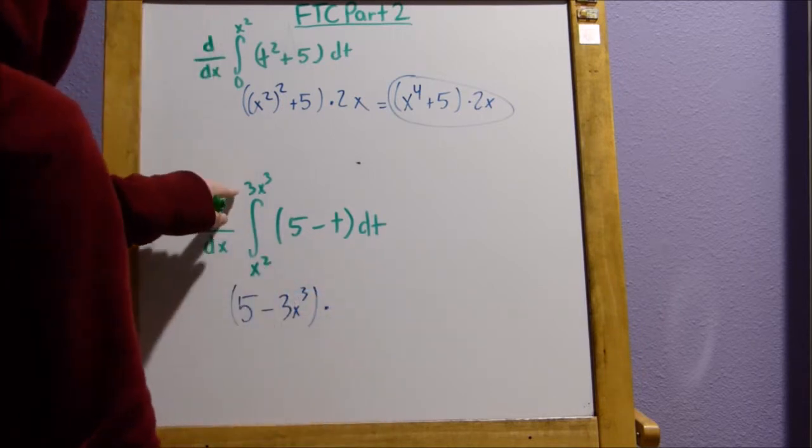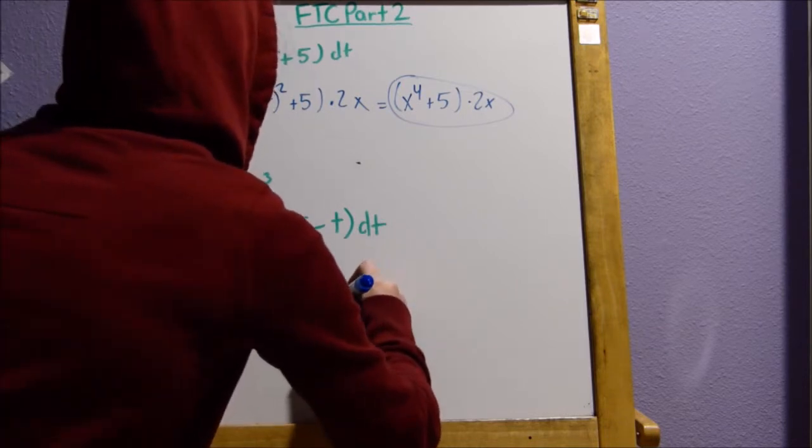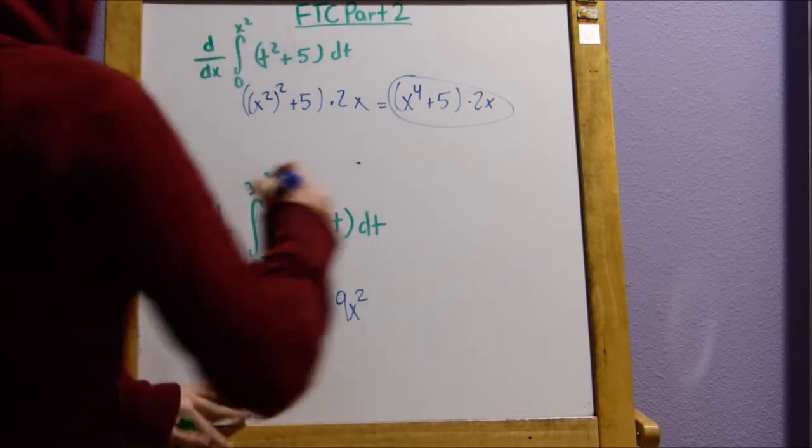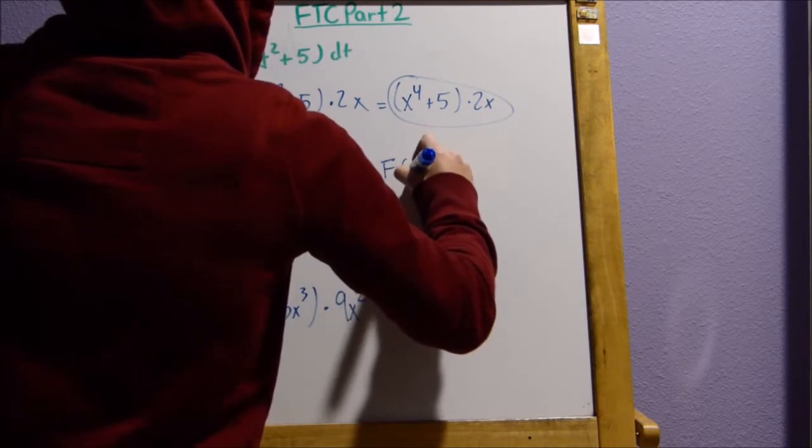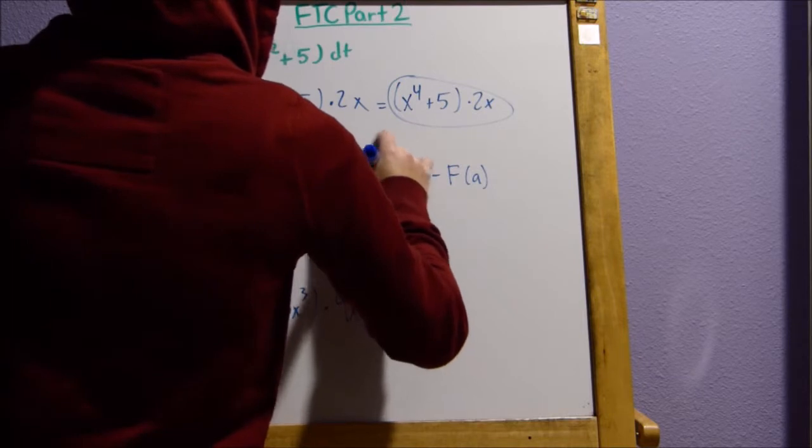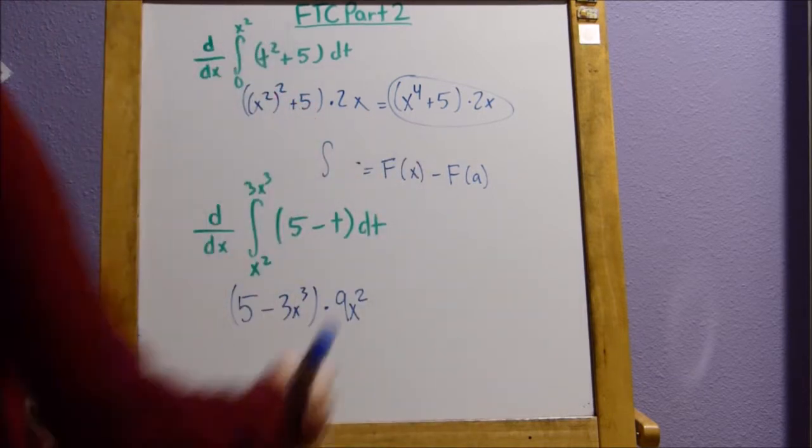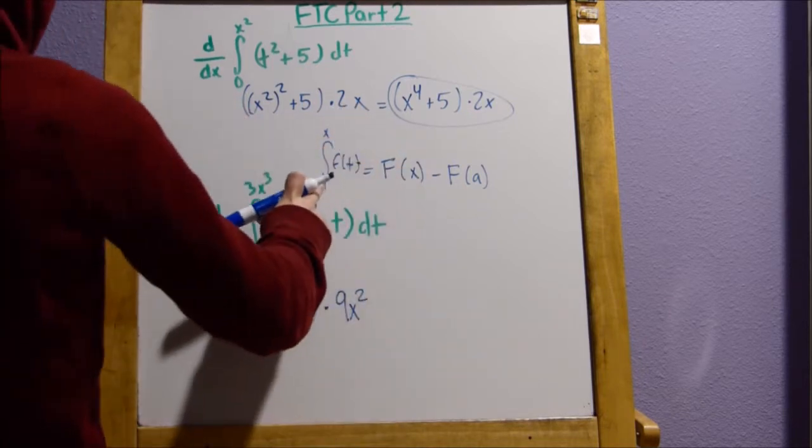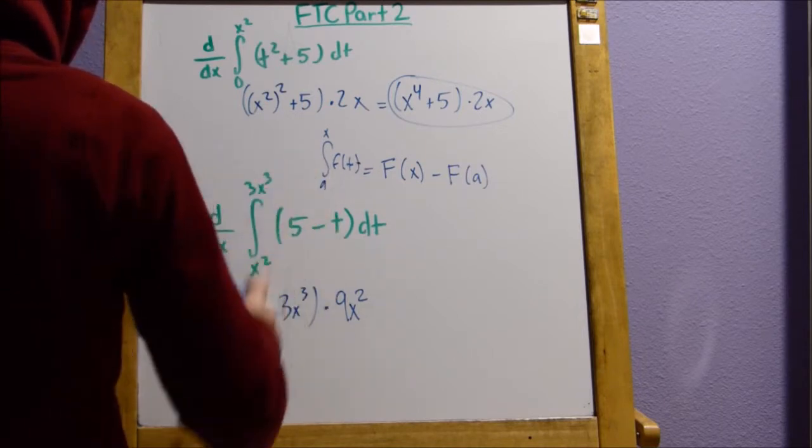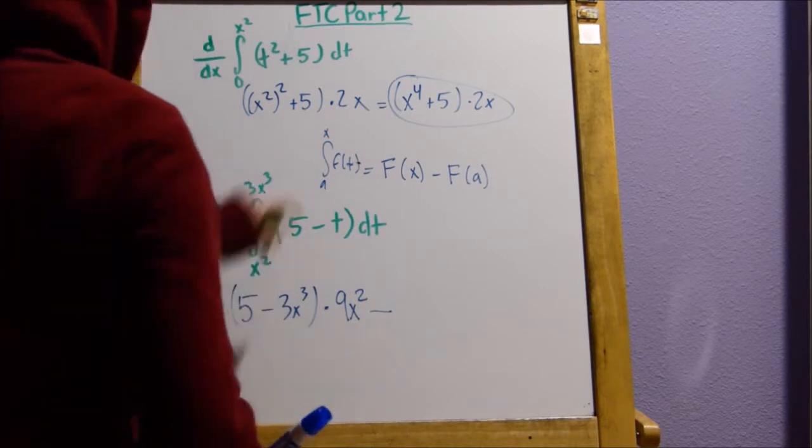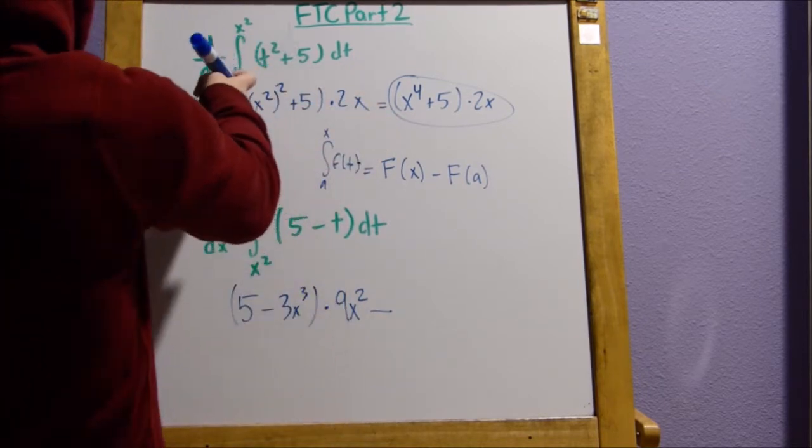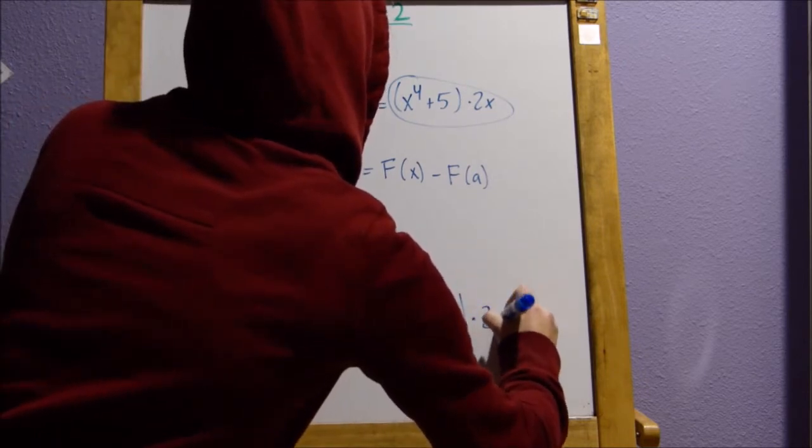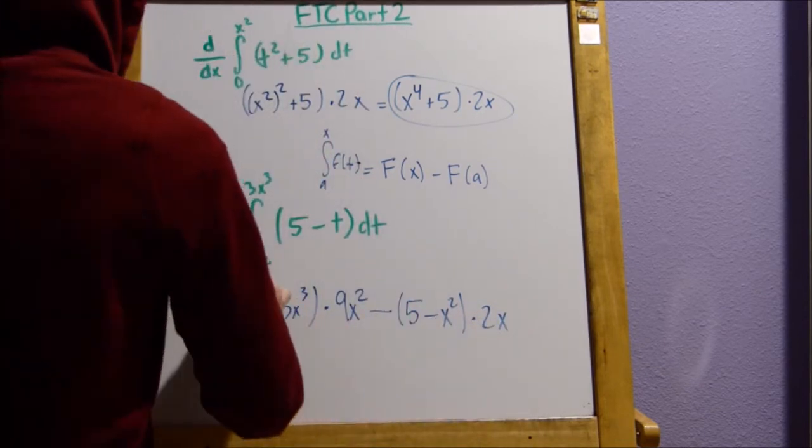Now, you should multiply by the derivative of this number here. So, that would be times nine x squared. Now, FTC part one states that f of x minus f of a is what the antiderivative is. Now, if you have an x here, you're going to want to subtract it. You can't just leave it alone and not do anything for this here. So, it would be minus five minus x squared and multiply it by the derivative of this number. So, this is what your entire answer would be.